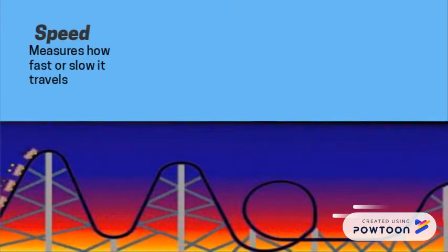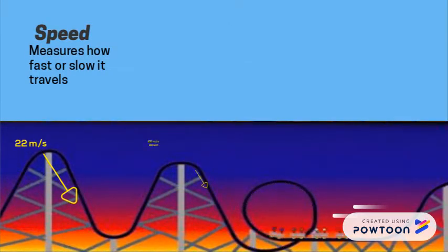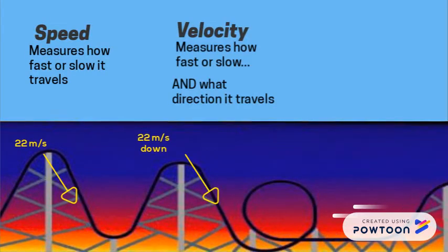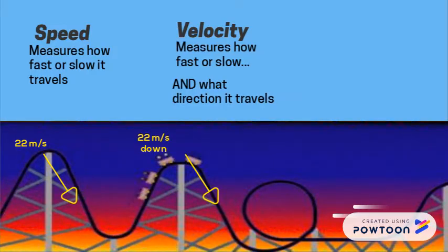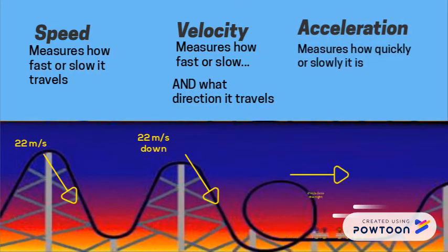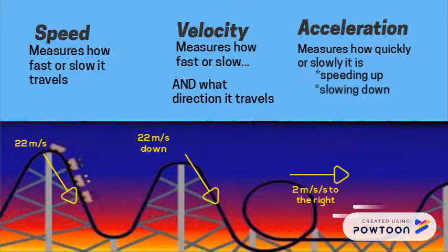Let's use the roller coaster as an example. To measure speed, you want to know how fast it travels. Velocity measures how fast or slow and in what direction. And acceleration measures how quickly or slowly it's speeding up, slowing down, or changing direction.